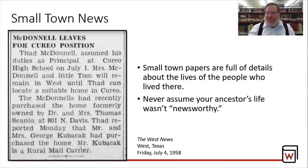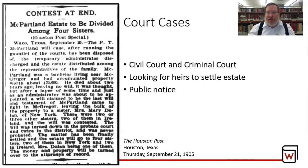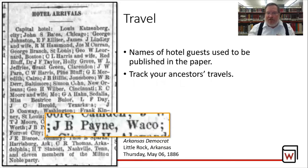Never assume that your ancestors' life wasn't newsworthy. And court cases — besides criminal cases, there are lots of civil cases, wills, and all kinds of things, especially when you have intestate — a will without a will itself — and you want to get all the people listed in the family at that time. And travel: did you know a lot of hotels listed who was staying at their hotel? Here we are in a Little Rock, Arkansas hotel, and there's a J.B. Payne from Waco staying there. Sometimes you can find information about where your ancestor worked, where they went for vacation, and get other clues to help you look for additional resources.